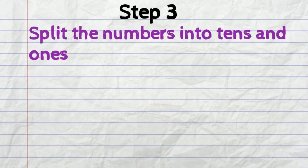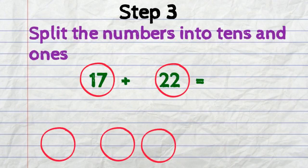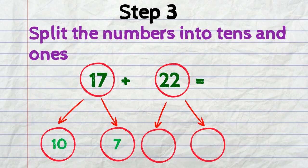Step number three. Split the numbers into tens and ones. So 17 will be split into a 10 and a 7. 22 will be split into a 20 and a 2.